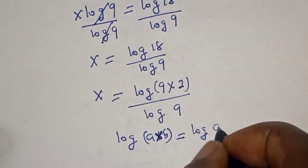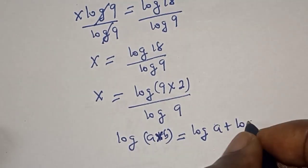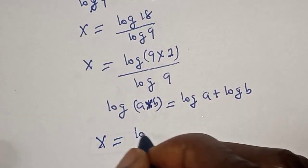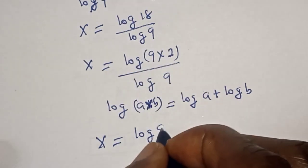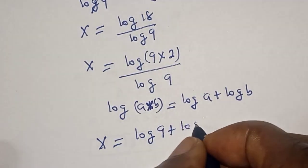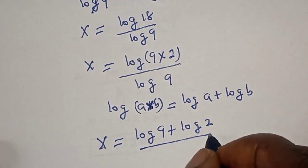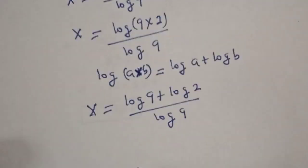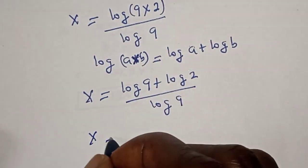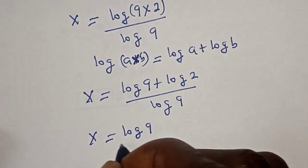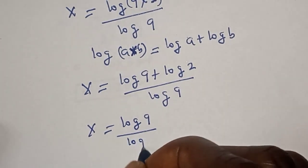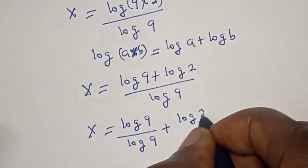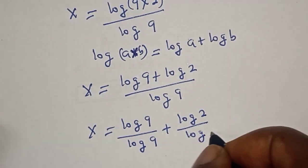Remember, if you have log of a multiplied by b, this is equal to log a plus log b. So we have s is equal to log 9 plus log 2, all over log 9.